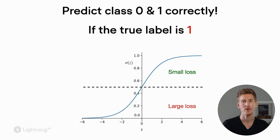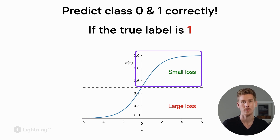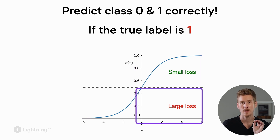Let's understand how the logistic regression loss works. Assuming we have a true label of 1, we want the activation function to output a value greater than 0.5, because if it's greater than 0.5 it will be thresholded to class label 1, giving a correct prediction. So everywhere the logistic activation is greater than 0.5 we have a small loss. If the activation is smaller than 0.5, we have a large loss, because the threshold function would output class label 0, making a wrong prediction.